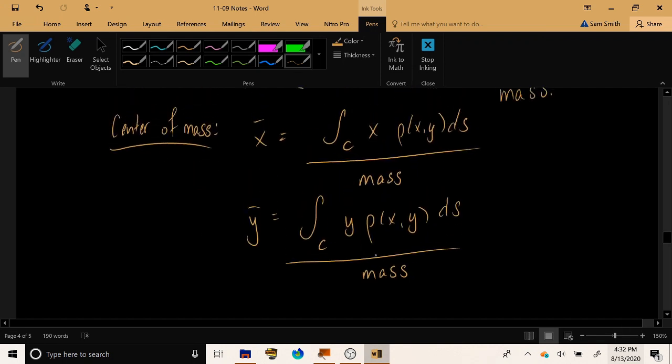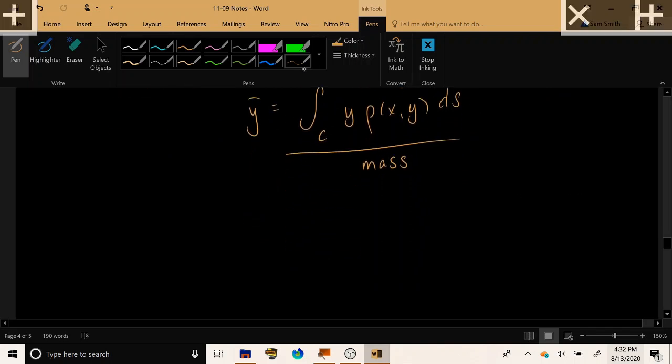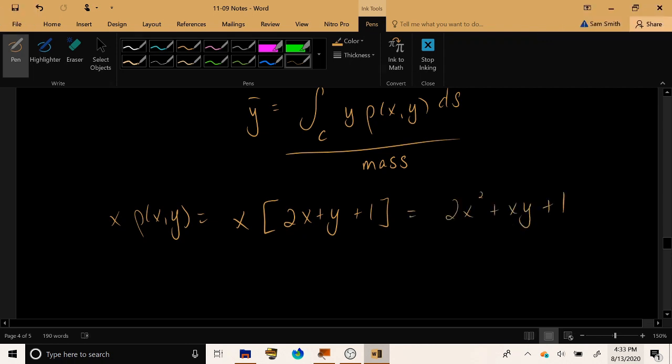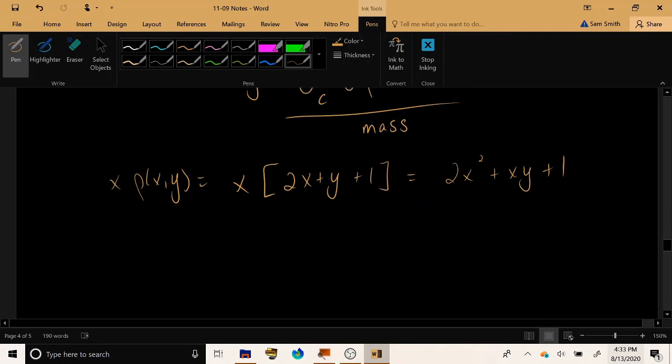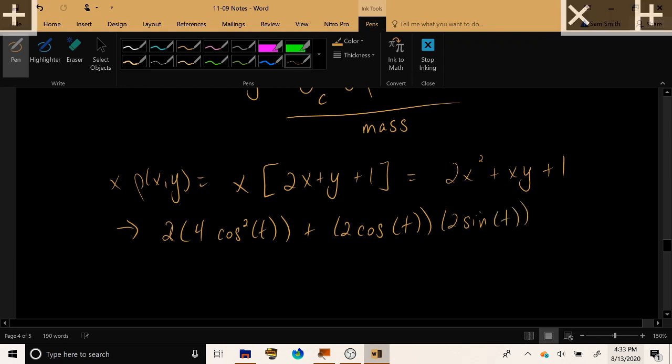So, let's consider the problem of finding these moments, line integral of x rho xy and y rho xy. x rho xy or x times the quantity 2x plus y plus 1 can be simplified as 2x squared plus xy plus x. And with x equaling 2 cosine and y equaling 2 sine, this becomes 2 times 4 cosine squared t plus 2 cosine t times 2 sine t plus 2 cosine t.